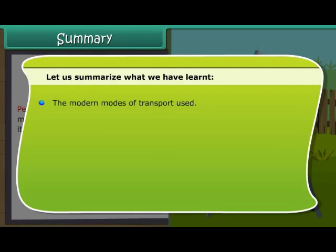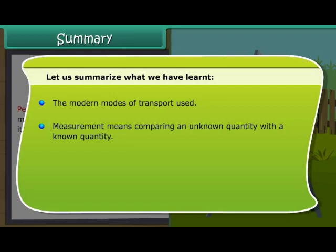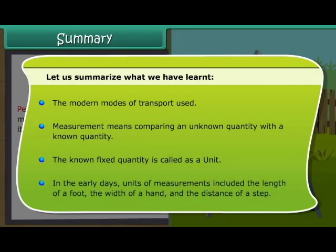The modern modes of transport used. Measurement means comparing an unknown quantity with a known quantity. The known fixed quantity is called as a unit. In the early days, units of measurements included the length of a foot, the width of a hand and the distance of a step.